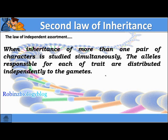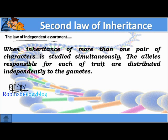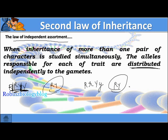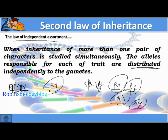These new combinations give us the second law of inheritance, which is the law of independent assortment. It states that when inheritance of more than one pair of characters is studied simultaneously, the alleles responsible for each of the traits are distributed independently to the gametes. In this condition we were getting gametes in limited combinations, but with independent assortment we get all possible combinations in the gametes.